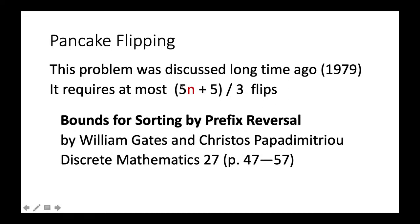At that time it was already known that we don't need 2n flips — just (5n+5)/3 flips are enough. That is roughly 1.666n, which is better than 2n. This result appears in a paper called 'Bounds for Sorting by Prefix Reversal' — a prefix reversal reverses the beginning part of an array. The paper was written by William Gates and Christos Papadimitriou. William Gates — his nickname is Bill Gates, the former CEO of Microsoft.